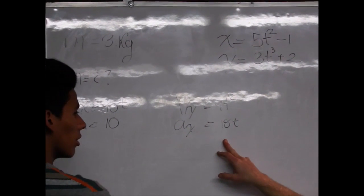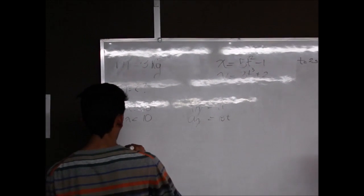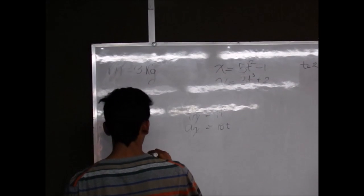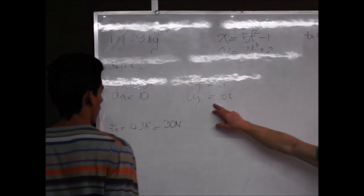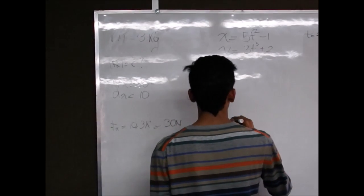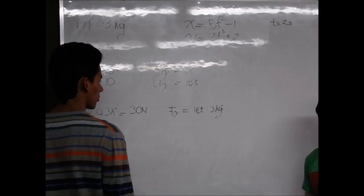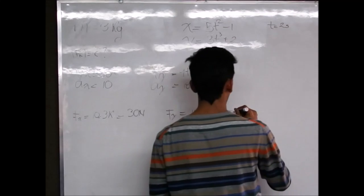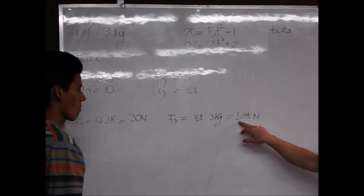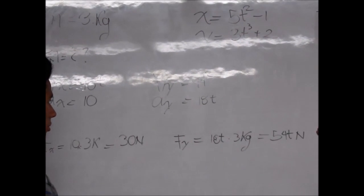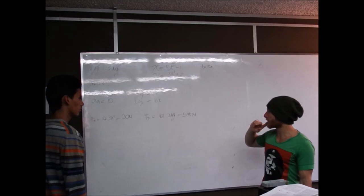fx = ax × masa = 10 × 3 = 30 N. fy = 18t × 3 = 54t N. ¿Qué significa este 54t newton? Significa que la fuerza no es constante; es una fuerza que varía con el tiempo. Pero no hay problema, siempre podemos utilizar la segunda ley de Newton aunque la fuerza no sea constante.